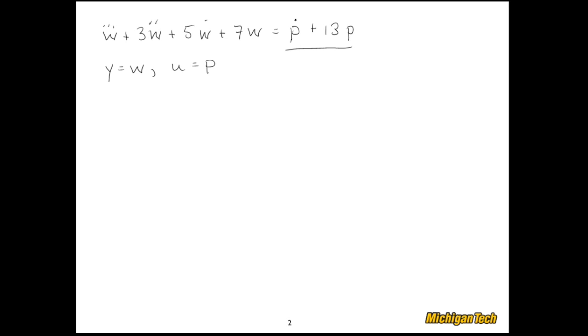Now if we just have at it and start trying to do a state space representation, we might want to do something like this. X1 is equal to W, X2 is W dot, X3 is W double dot. Three states. We have three states because this is a third-order differential equation.